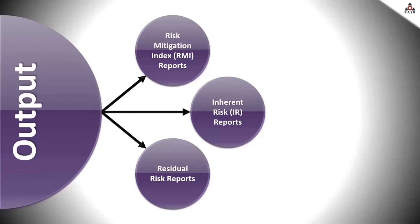The output means the three core metrics - the inherent risk, risk mitigation index, and the residual risk - represented in any way may be deemed relevant by the organization. They can be represented by product or business line or geography or in any way that's relevant.